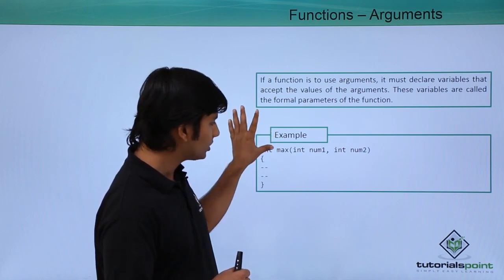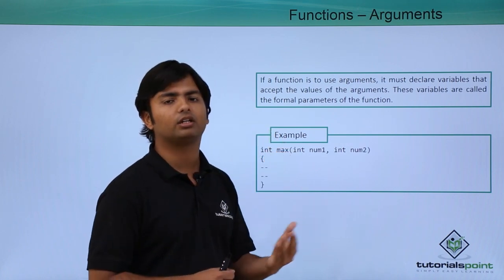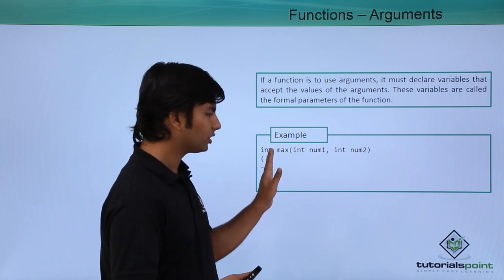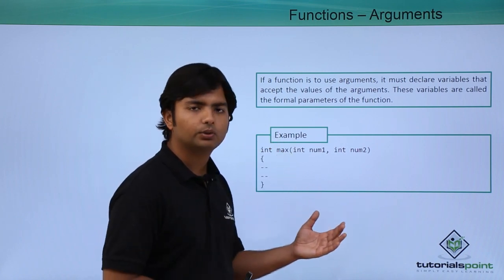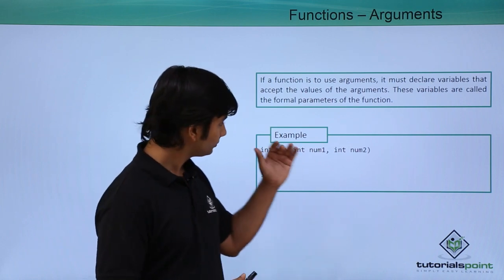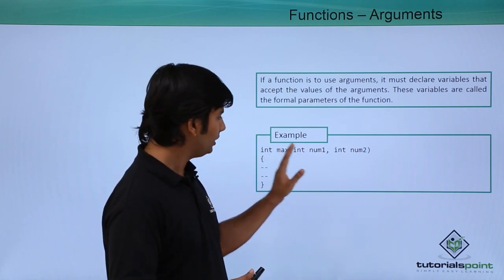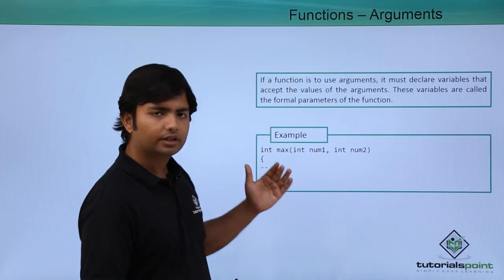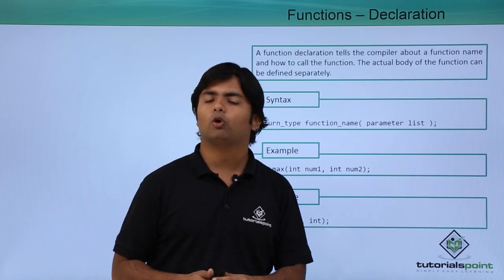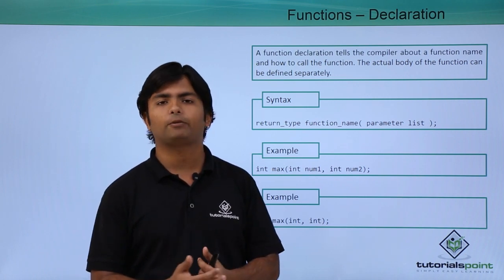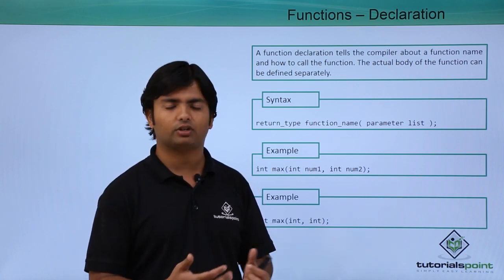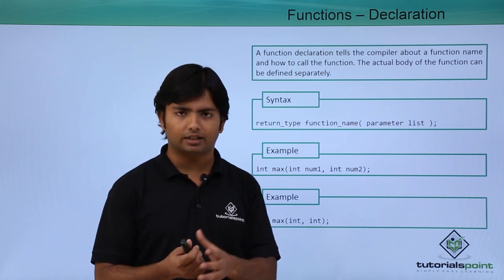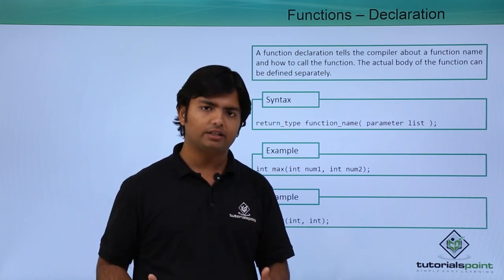By default in C language, if you don't mention the return type, it will be integer by default. But here it is clearly mentioned that at the end I can return a value of integer type — so this is the signature. In C language you can also define a prototype, which is also called a function declaration.